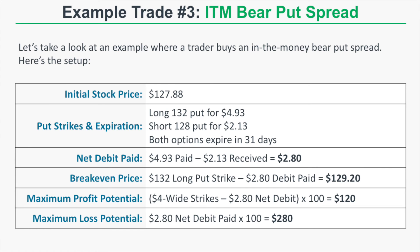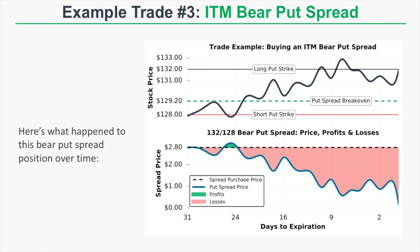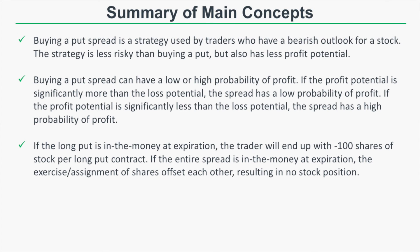Watching the in-the-money spread through time: the stock starts around $128 and we purchased the 132/128 put spread for a $2.80 debit. Unfortunately, the stock price increased steadily and at expiration was just below the long put strike of $132, making the spread essentially worthless. The loss per spread was around $280. This shows that even when you buy an in-the-money bear put spread with a high probability of profit, there's always the potential for the stock price to increase and cause a loss.